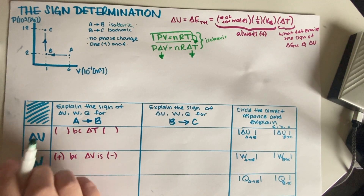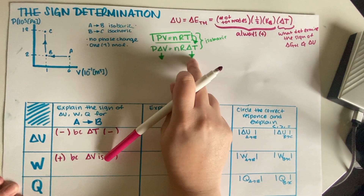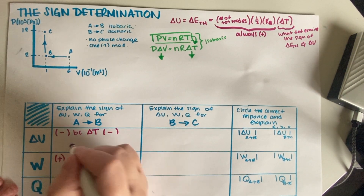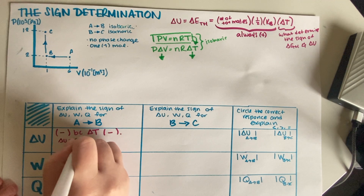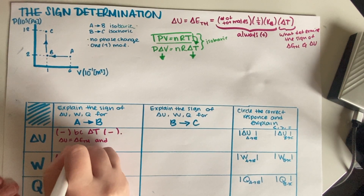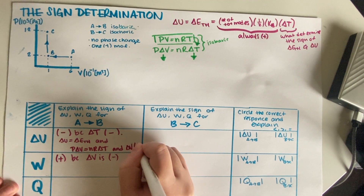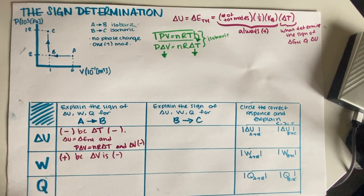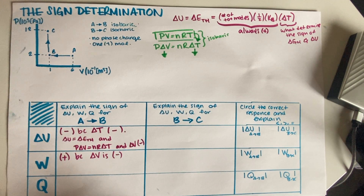So our final answer is that delta U is negative because the temperature is decreasing. The explanation is that delta U equals the change in thermal energy, and because this is isobaric, P times delta V equals nR times delta T, and delta V is negative. The explanation can vary — please don't assume you need the exact same wording, but it does have to make physical sense.